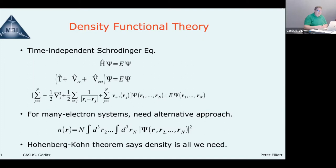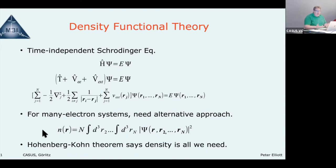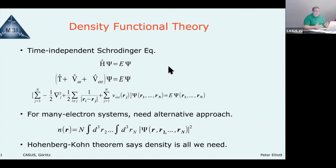The approach we use is DFT. DFT uses the density — defined by taking your wave function and integrating out all other degrees of freedom — which is just the probability of finding any electron at some position r in space. The reason we use the density is that Hohenberg and Kohn proved in 1964 that the density is basically all you need: they proved a one-to-one mapping between the density and the external potential, so if you know the density, you know the Hamiltonian and in principle all observables.